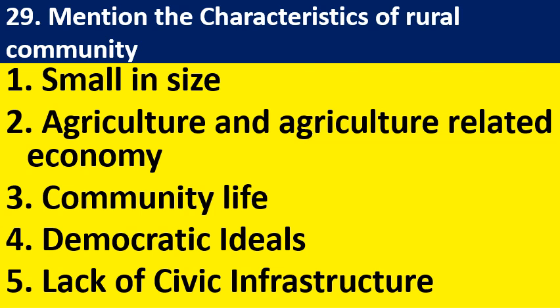Mention the characteristics of rural community: small in size, agriculture and agriculture-related economy, community life, democratic ideals, lack of civic infrastructure. Whenever you have only five points, explain any one point for three to four lines and you will get three marks.